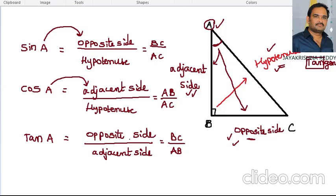The opposite side and adjacent side here are defined with respect to angle A. You can also write the formula with respect to angle C — there will be no change if you change these vertex points in the formulas. These are called the basic trigonometric ratios, and we will study trigonometric concepts using these ratios.